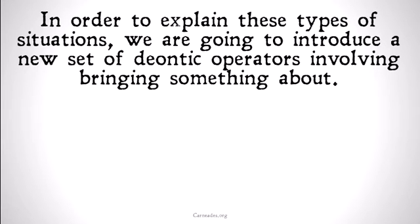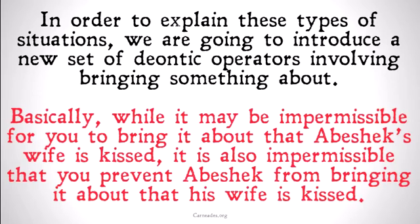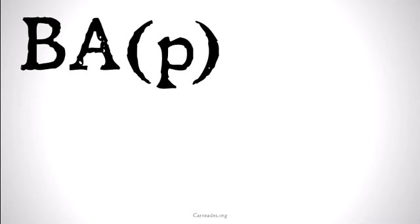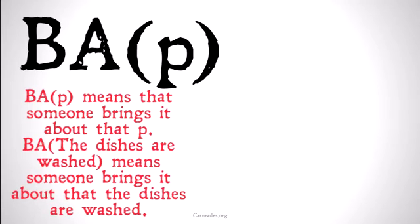In order to explain these types of situations, we're going to introduce a new set of deontic operators involving bringing something about. While it may be impermissible for you to bring it about that Abhishek's wife is kissed, it is also impermissible that you prevent Abhishek from bringing it about that his wife is kissed. This new set of modal operators is based around the idea of bringing something about, and we're going to represent that with BA. So BAP means that someone brings it about that P.